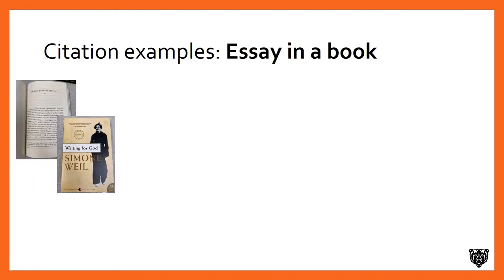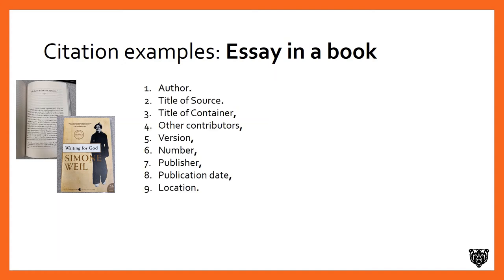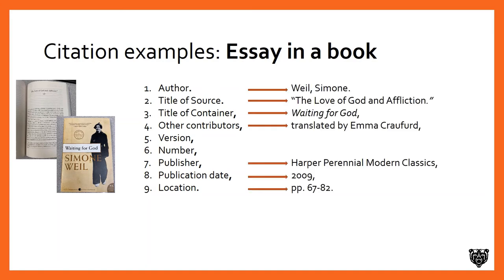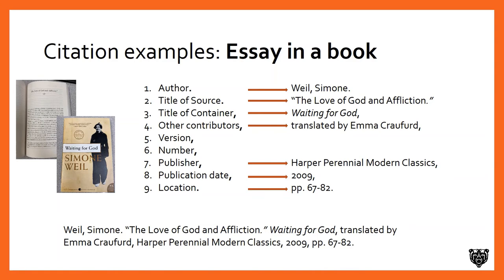Let's look at another common example: an essay in a book. The essay is called The Love of God and Affliction by Simone Weil. This one has a number of different elements than the previous example. So we put up our list of elements and fill them in: Weil, Simone for the author; the title of the source is The Love of God and Affliction. This one actually has a container — the larger work containing the smaller work — called Waiting for God. Then we have another contributor, a translator: translated by Emma Crawford. We put in the publisher, the publication date, and the location, which is just the page numbers where the essay is located within the book. String it all together and there is our MLA citation.